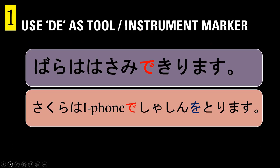Let's look at 'de' as the marker for tools and instruments. In Lesson 5, we used 'de' to mark the vehicle. Lesson 6 used it to mark the venue or place of action. For Lesson 7, we use 'de' to mark the means — a tool or instrument — the object used to carry out the verb. For example, 'Bara wa hasami de kirimasu' — I cut the rose using scissors. 'Bara' is the topic marked by 'wa'; 'hasami' is the instrument marked by 'de'; 'kirimasu' means to cut.